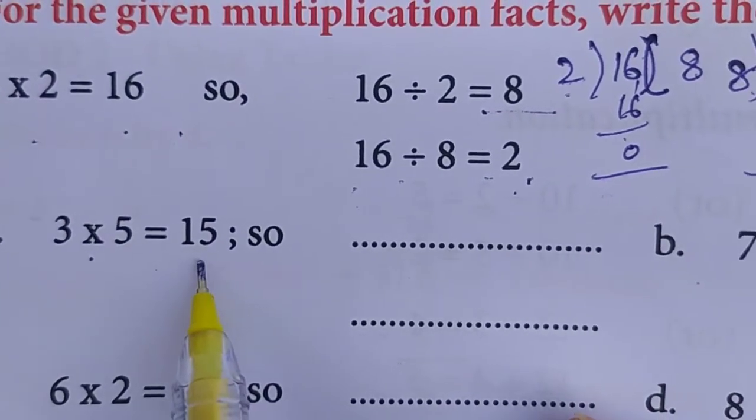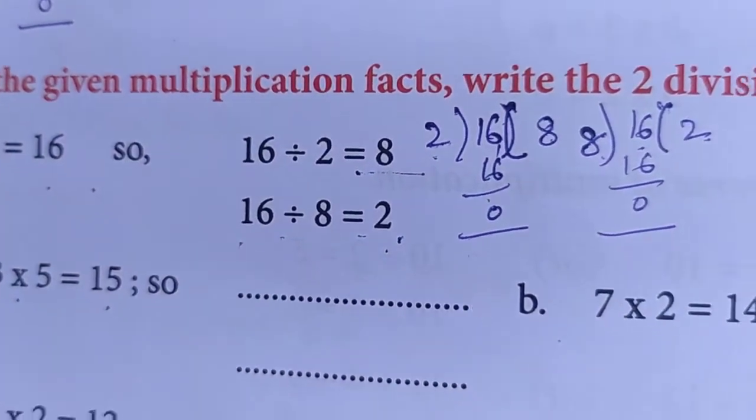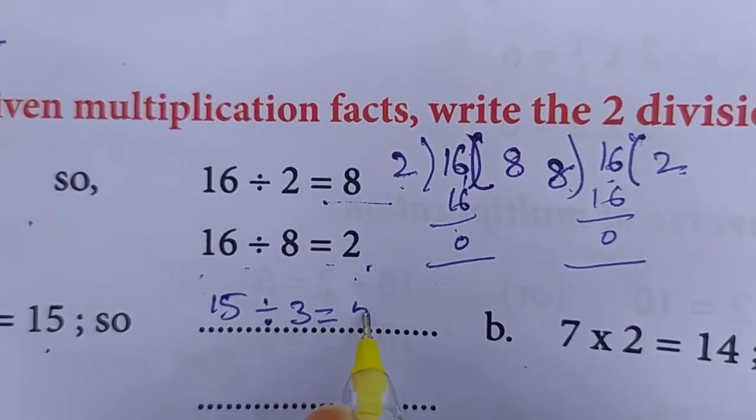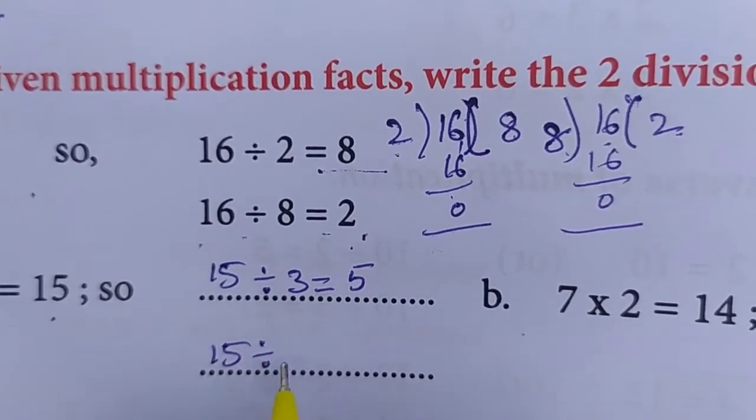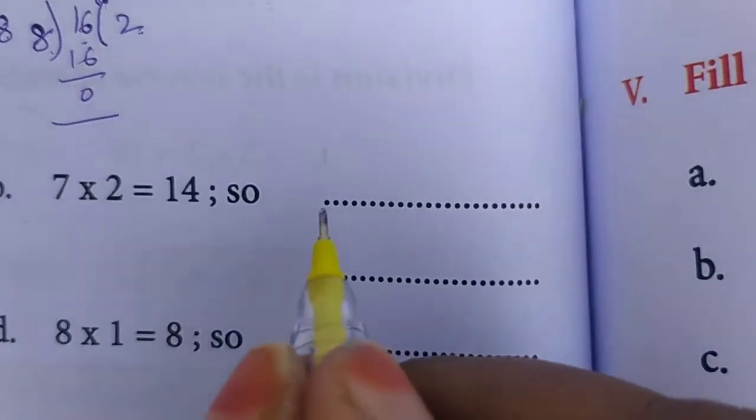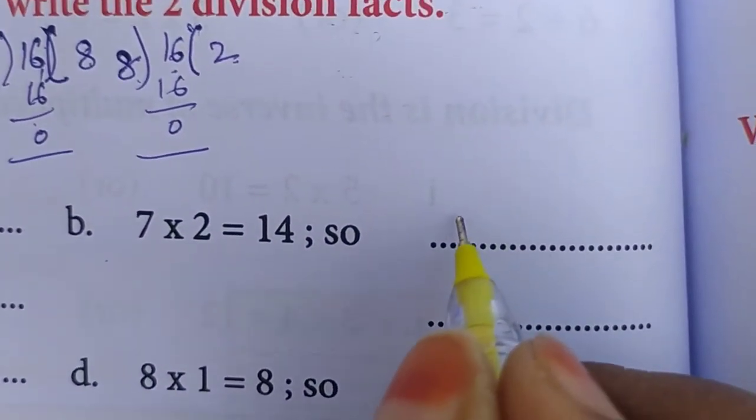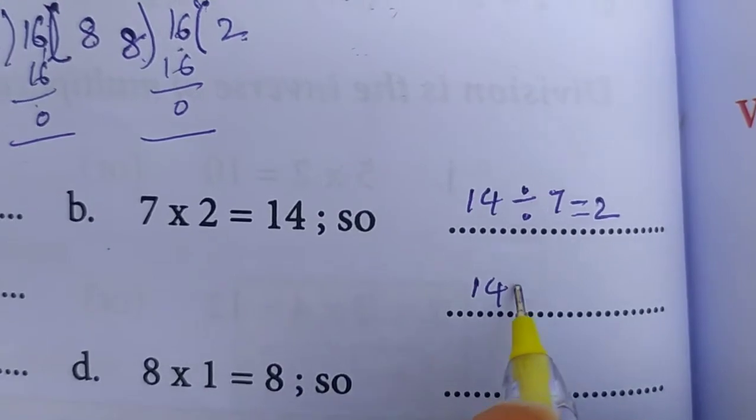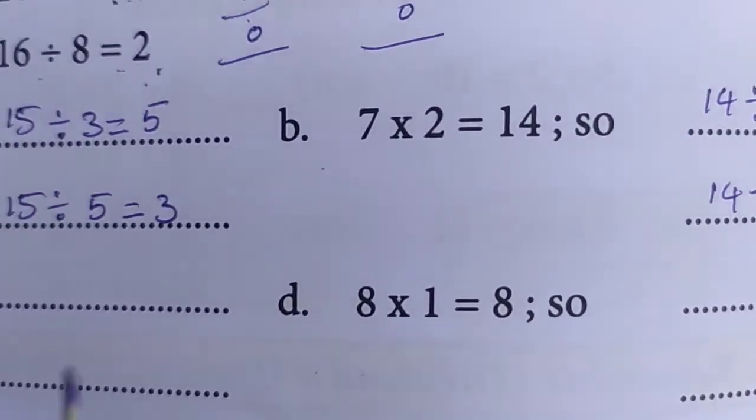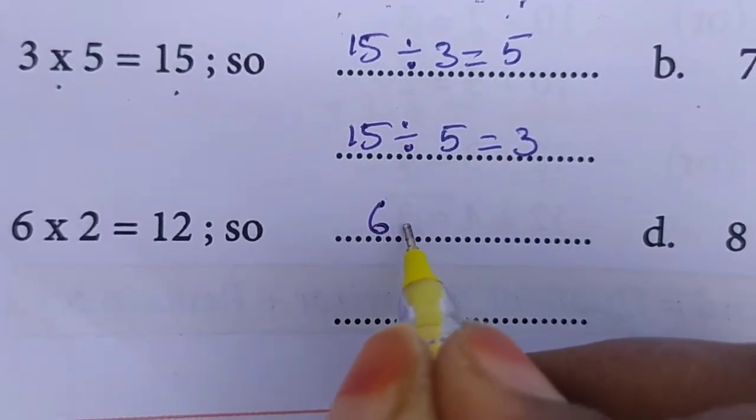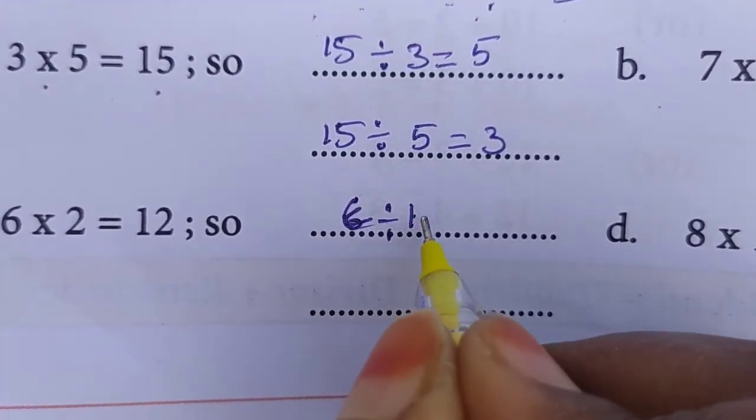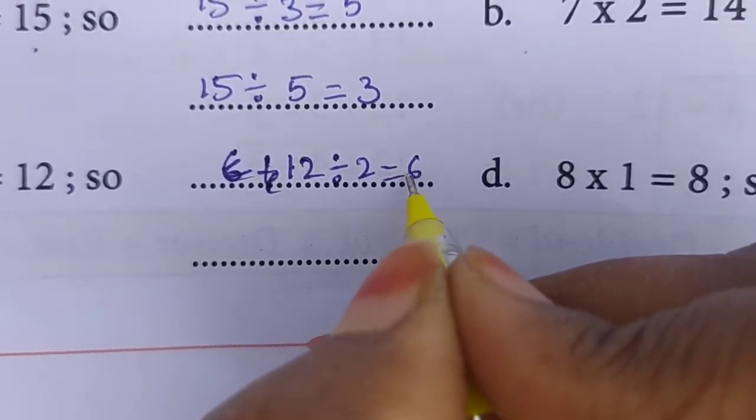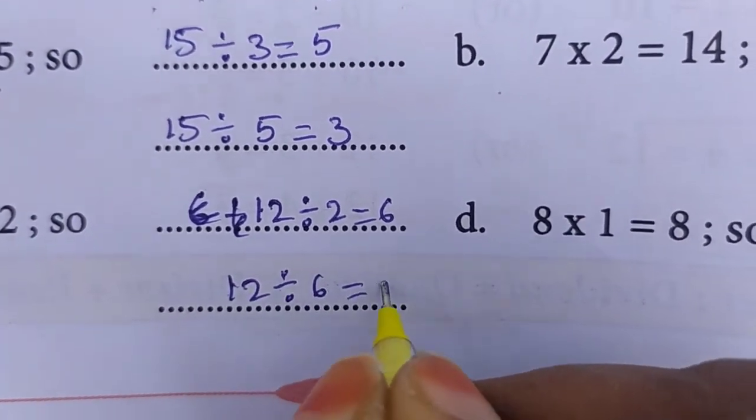3 into 5 is equal to 15. 3 fives are 15. What division fact we can write? 15 divided by 3 is equal to 5, 15 divided by 5 is equal to 3. Now, 7 into 2 is 14. 14 divided by 7 is equal to 2, 14 divided by 2 is equal to 7. 6 twos are 12. 12 divided by 2 is equal to 6, 12 divided by 6 is equal to 2.